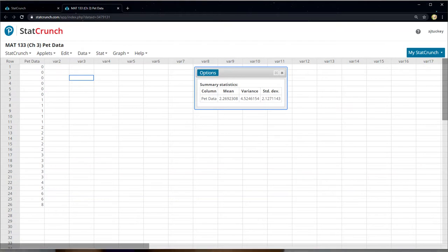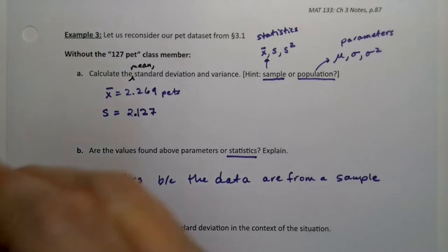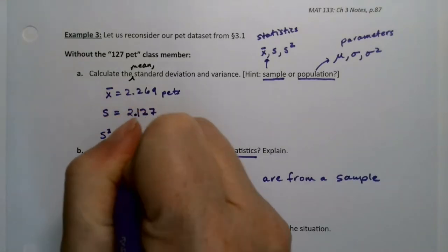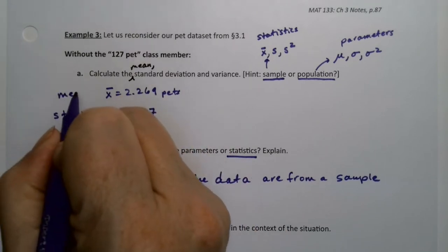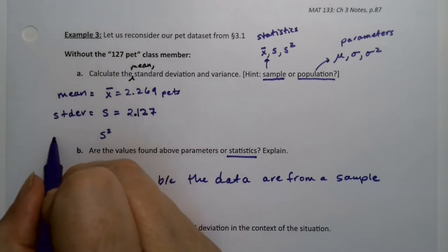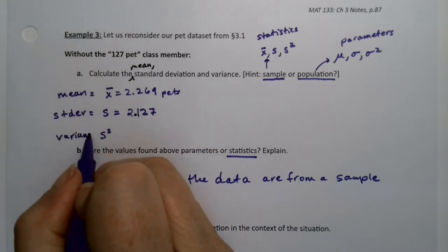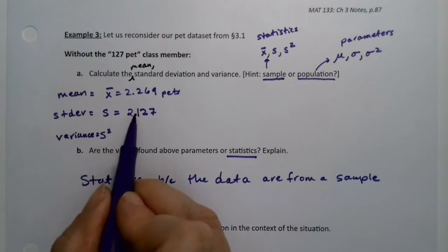So 2.269 is x bar, which of course the unit is pets. The standard deviation is s, which is 2.127. And then the variance is s squared. Now, StatCrunch is giving it to us. But if you don't have StatCrunch, or you're preferring the calculator, well, this is the mean, this is the standard deviation, this is the variance.